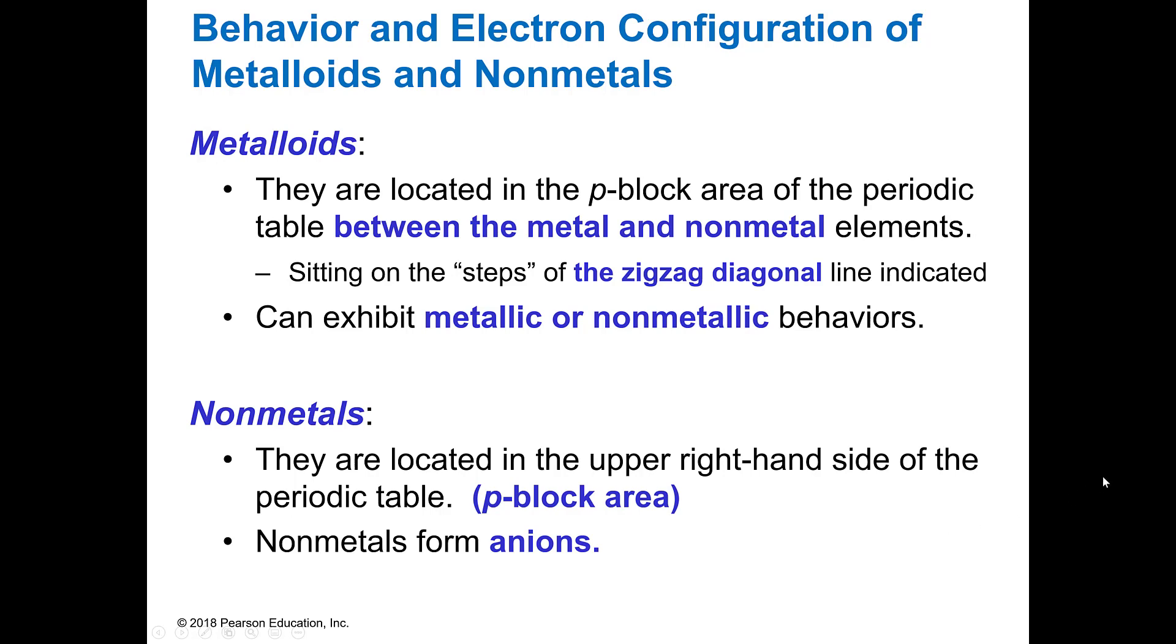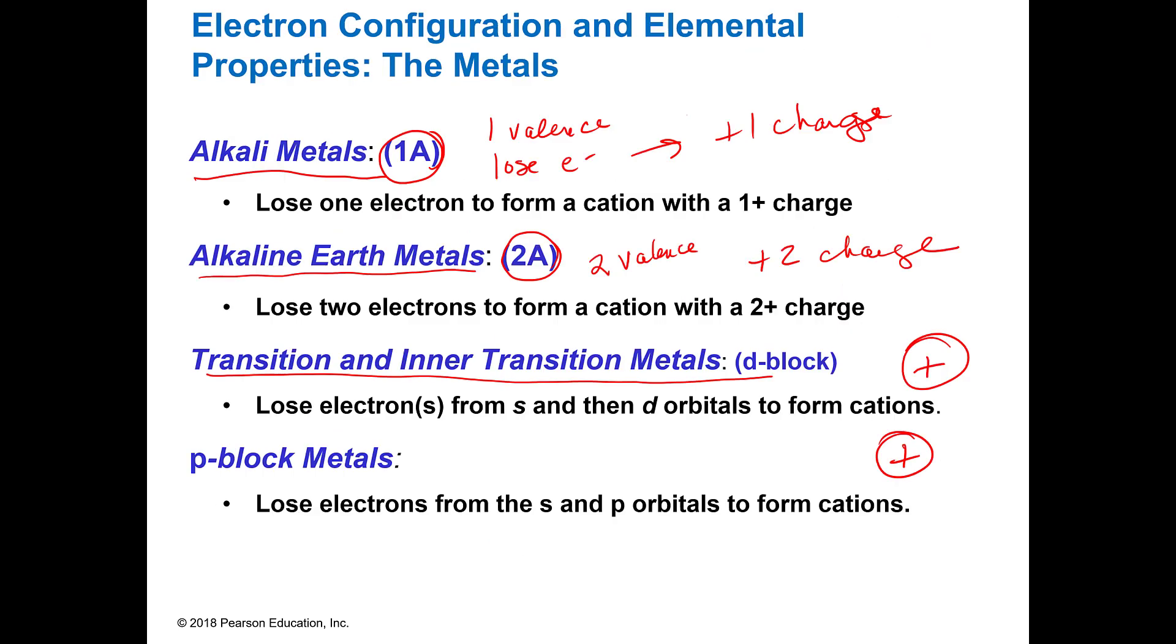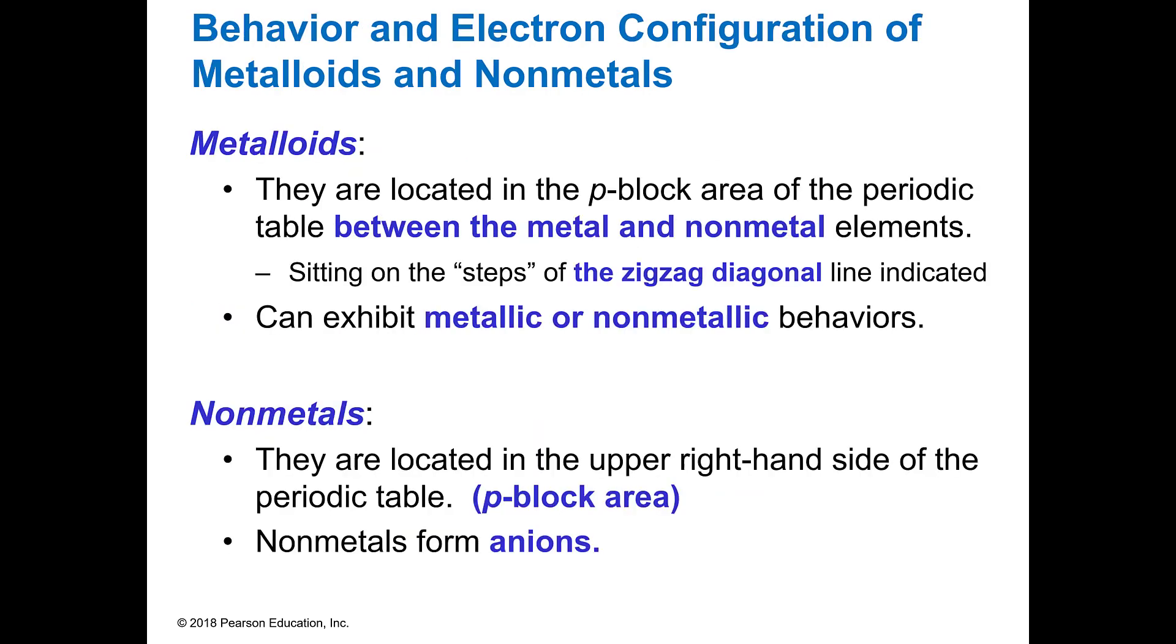So we said that we have metals. They form positive ions and they're on the left hand side of the periodic table. Then there are the non-metals and the non-metals are all going to be on the right hand side and they gain electrons and form negative charges.